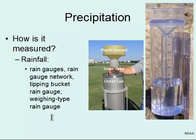Tipping buckets work by filling up a bucket as rain falls, and when that bucket fills, it tips over. Each time it tips, a little electronic counter records how many tips happened, and each tip represents a certain volume of water that has fallen. There's also a weighing type gauge that simply measures the weight of water that has fallen.